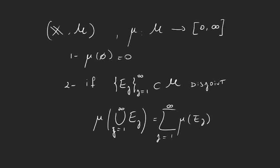And we say that this function mu is a measure if it satisfies these two properties. First one is the measure of the empty set is zero, and the second one is that whenever we grab a sequence of disjoint sets in the sigma algebra, then the measure of the union is the sum of the measures.